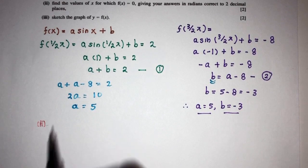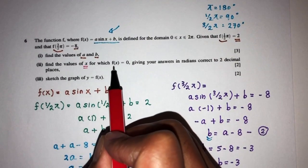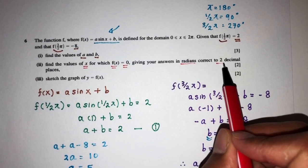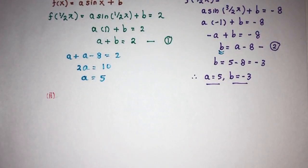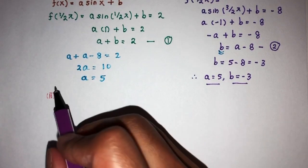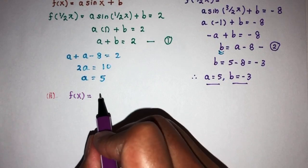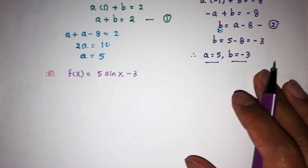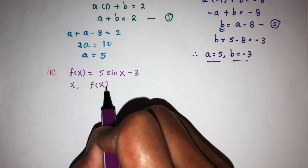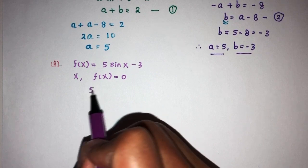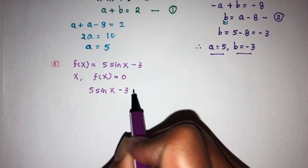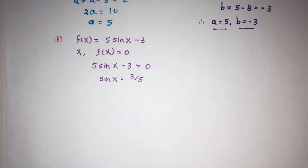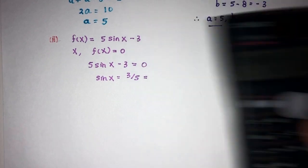For part 2 of the question: find the values of x for which f of x equals 0, giving your values in radians correct to 2 decimal places. We now know f of x is 5 sin x minus 3. Setting this equal to 0: 5 sin x minus 3 equals 0, which means sin x equals 3 over 5. Simplifying: 3 divided by 5 equals 0.6.